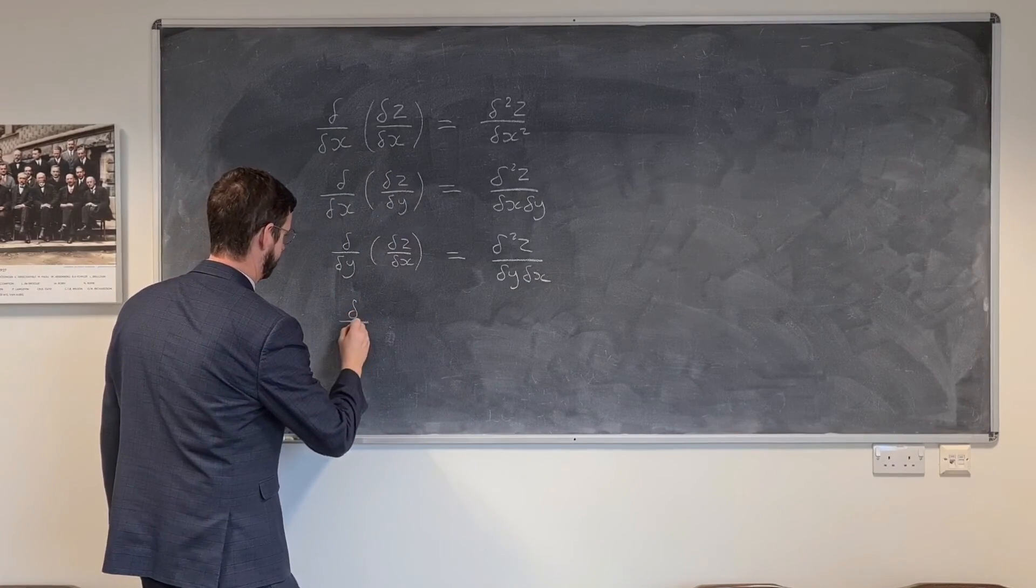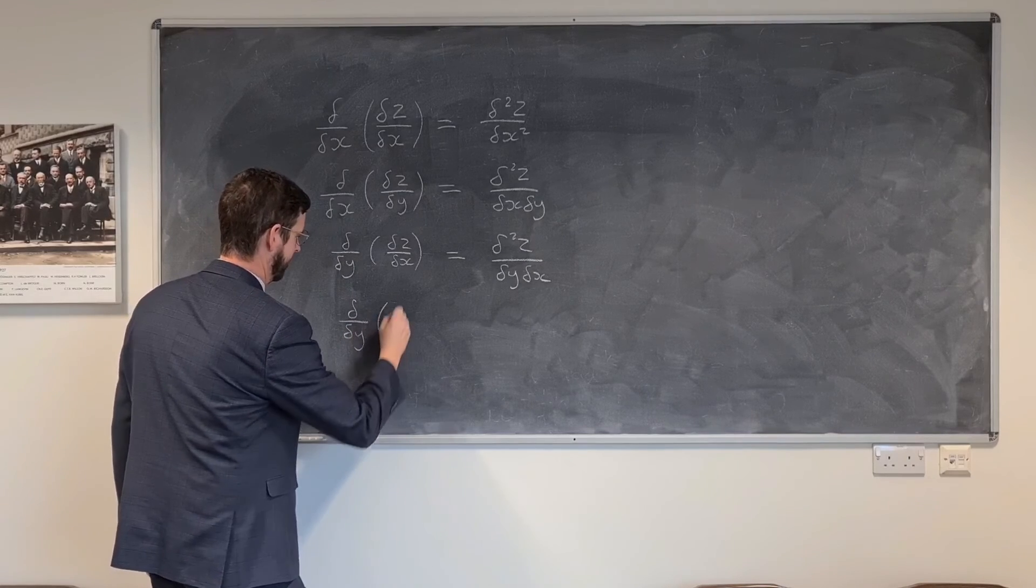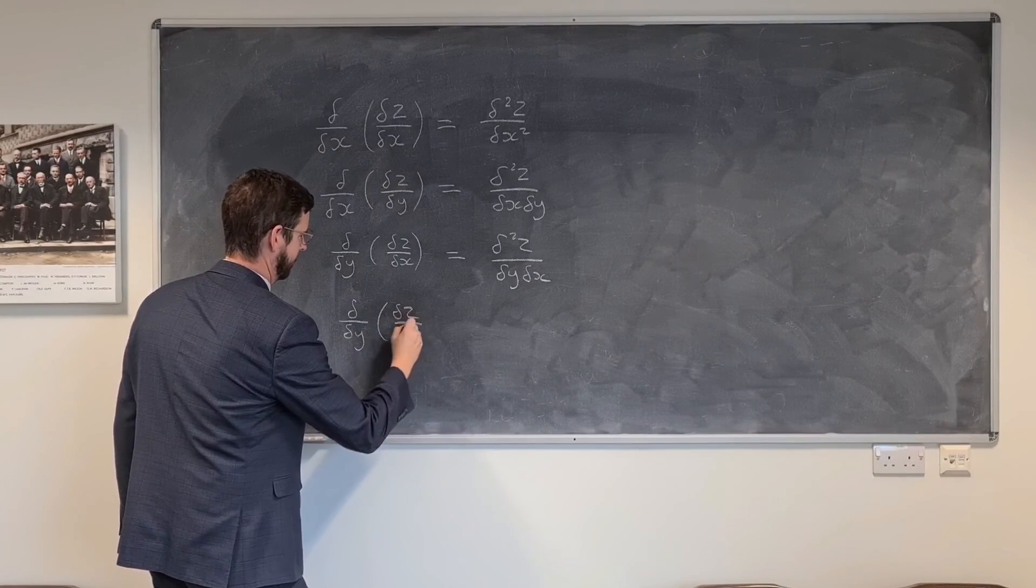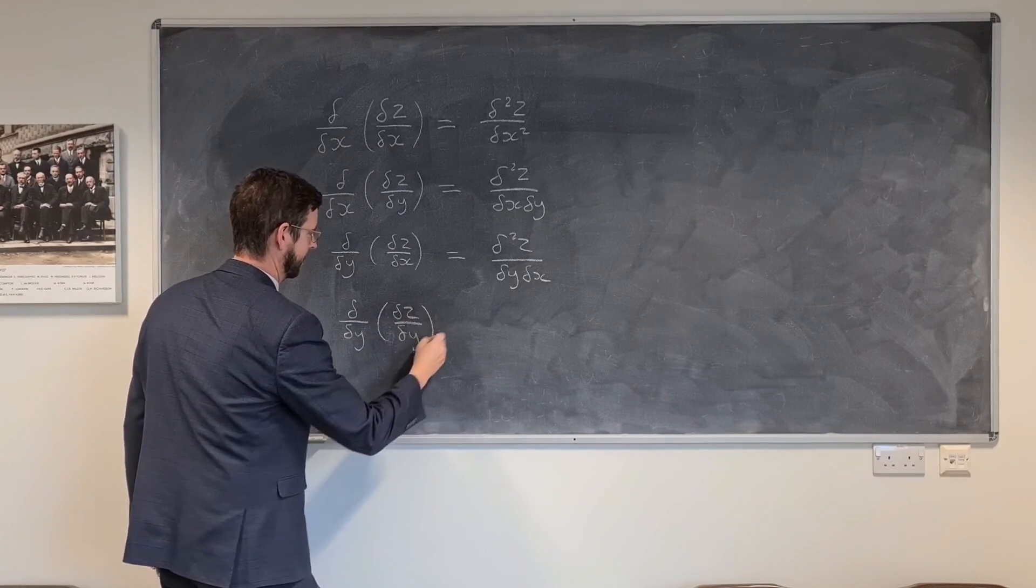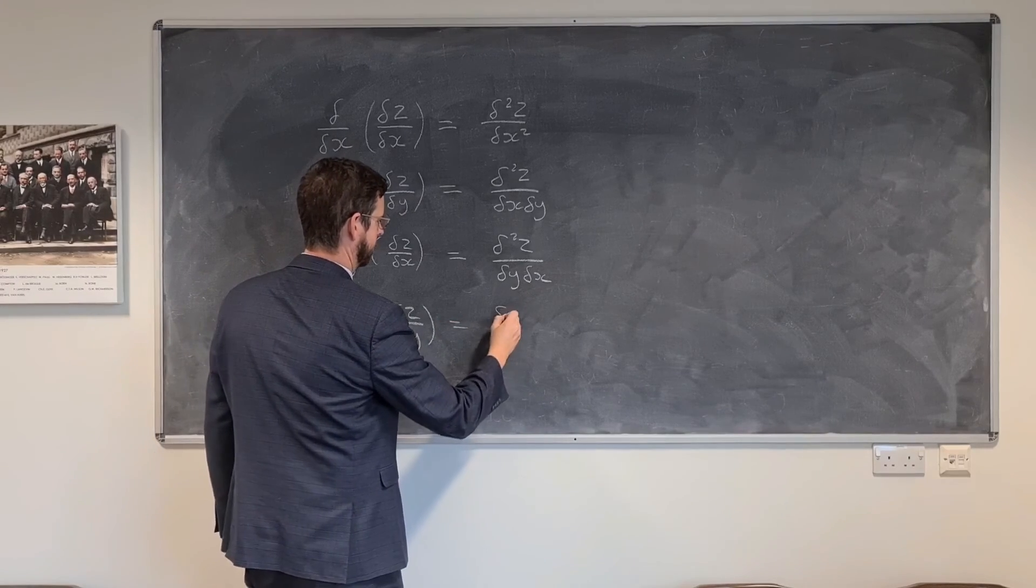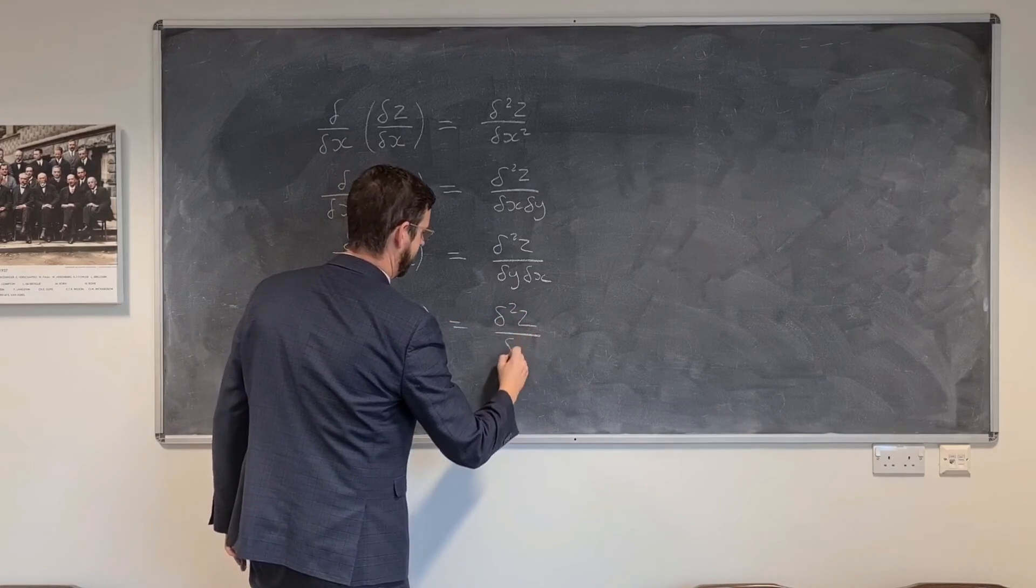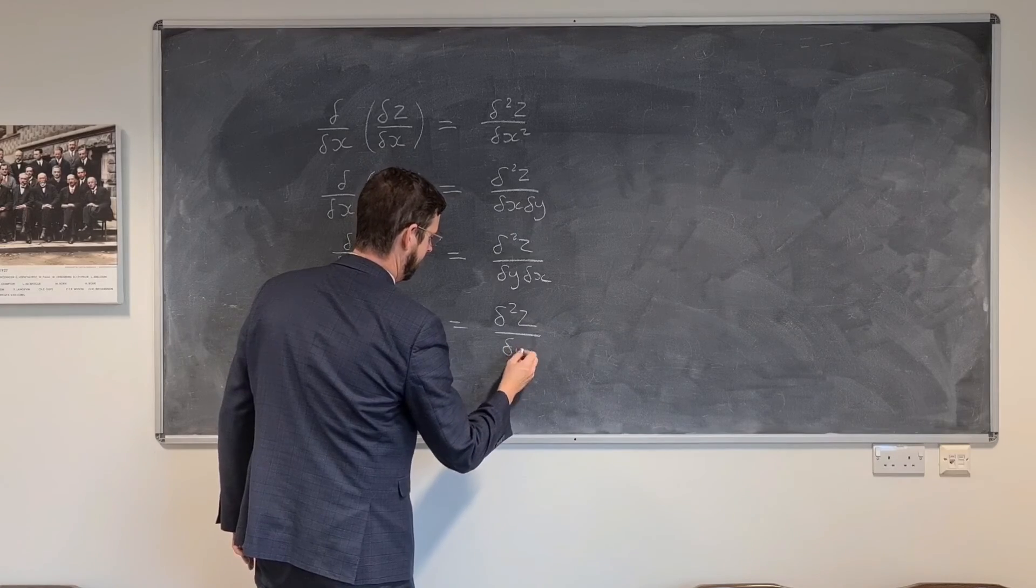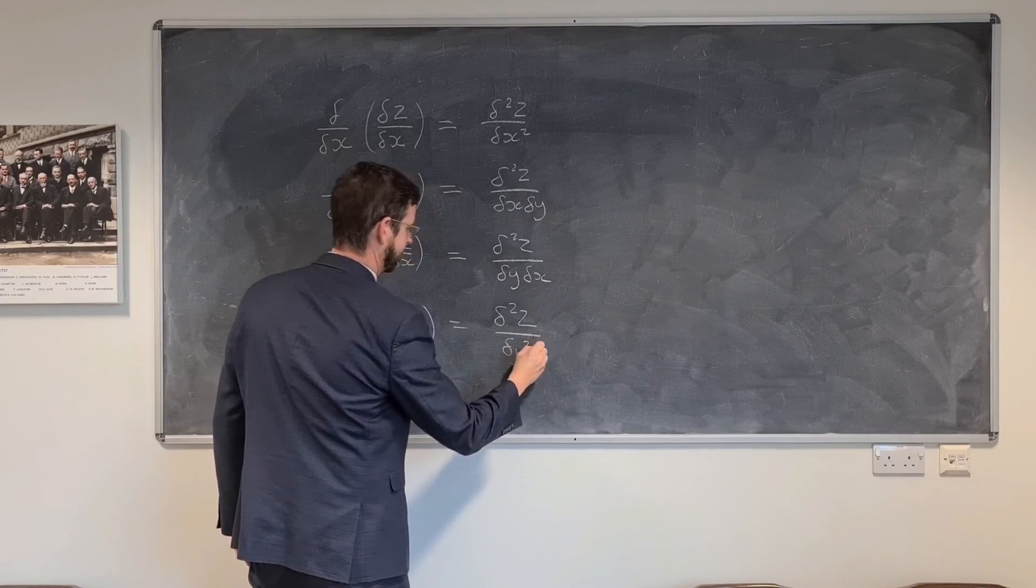And then finally, we could differentiate with respect to y, and have this one differentiated with respect to y. This would create d squared z by dy squared.